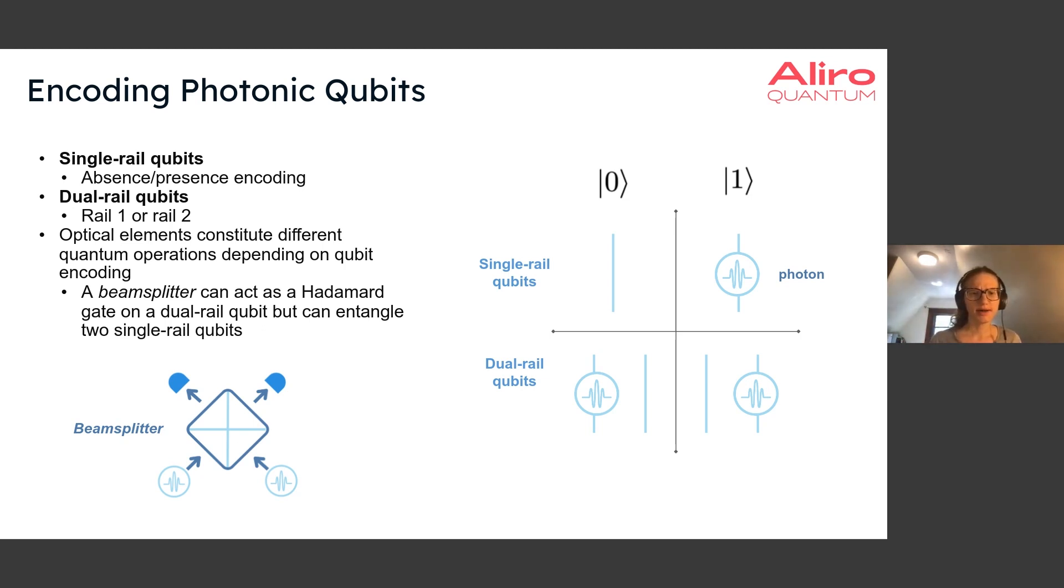Let's talk a bit about different ways of encoding photonic qubits and particularly rail-based encodings. One way to encode a photonic qubit is through a single rail encoding, which is just an absence-presence encoding. In this encoding, we can see that we have our two quantum states, zero and one. And we encode our zero state just as an absence of a photon. And we encode our one state as the presence of a photon. And then we can have any superposition of absence or presence of a photon.